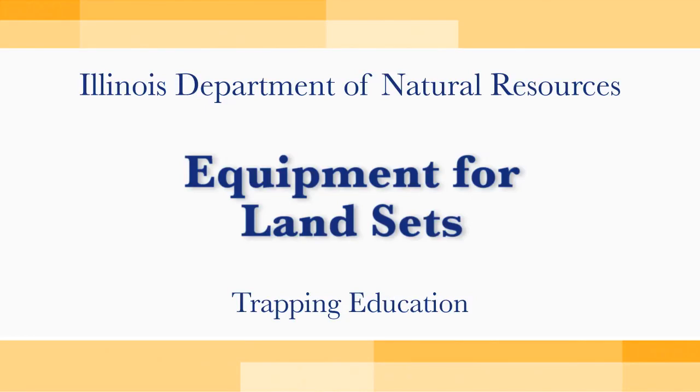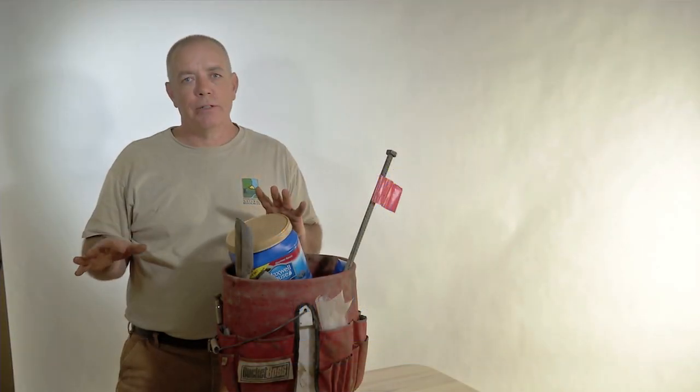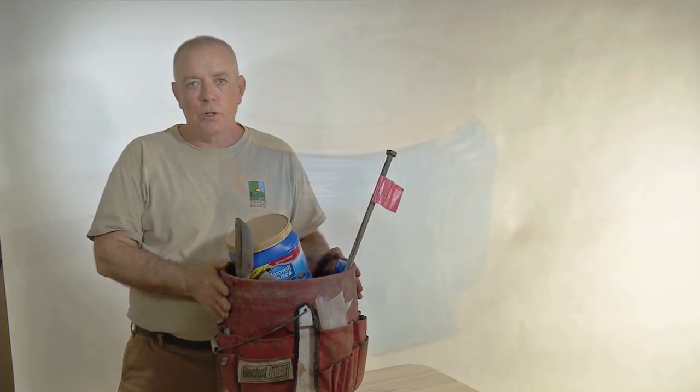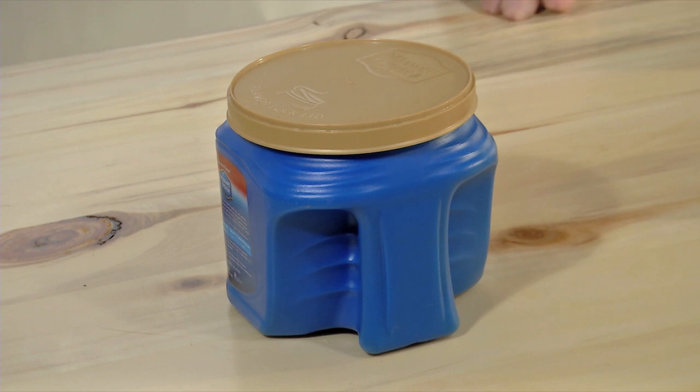A lot of times when you're coyote trapping, you're going to be working out of your vehicle and you can keep most of your supplies in the vehicle and bring what you need just as far as you need to go to make a set. A five gallon bucket with an organizer is a good choice for that.